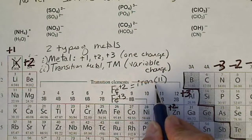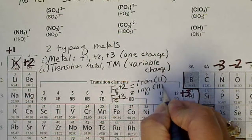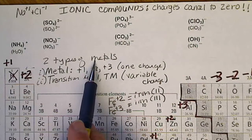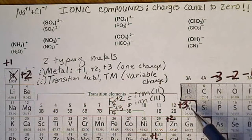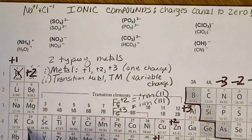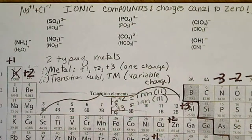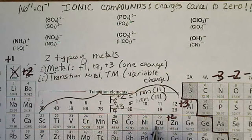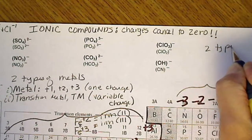Fe plus two is called iron two; Fe plus three is called iron three. When we learn to name, the first thing we have to distinguish is what type of metal we have — either a simple metal whose charge we always know (column one, column two, or one of those three metals), or a transition metal where the charge can vary, indicated by the absence of a charge written above those columns.